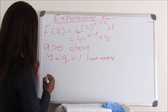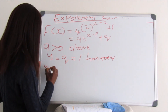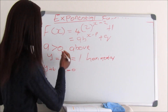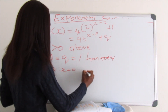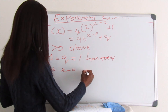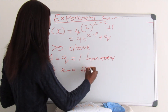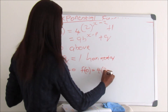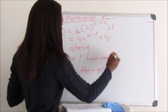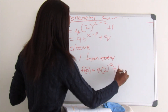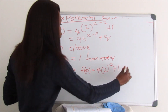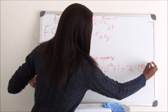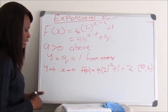We must find the Y-intercept by making X equal to 0. So f(0) equals 4 times 2 to the exponent of 0 minus 2, plus 1, which is 4 times 2 to the negative 2, plus 1. That gives us 2, so our Y-intercept is the point (0, 2).